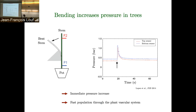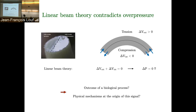We decided to do some modeling. Naively, when you bend a beam, one part is under compression — volume decreases, expelling water — and the other part is under tension, so volume increases. But at linear order, linear beam theory tells you the total volume should not change. So you should not see any overpressure. How can we explain what we saw? Is it purely biological? To answer this, we decided to build our own artificial branch where we could control everything.